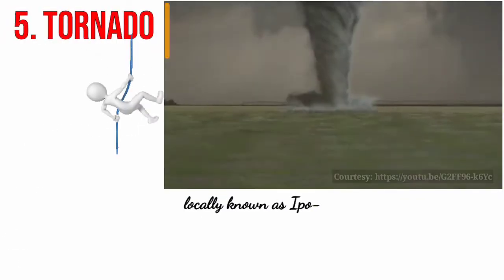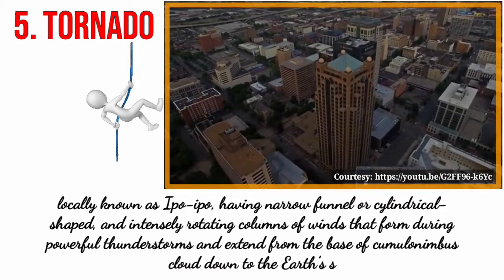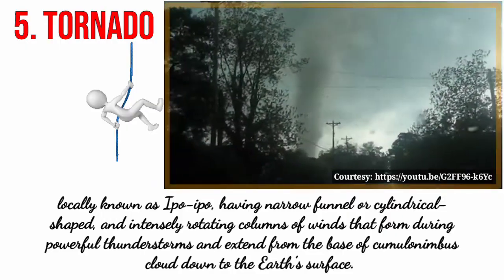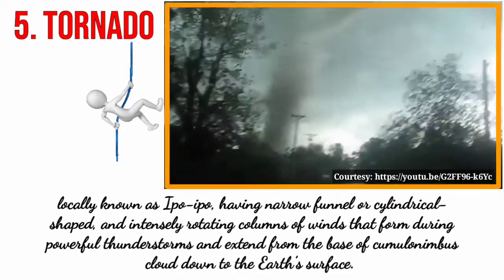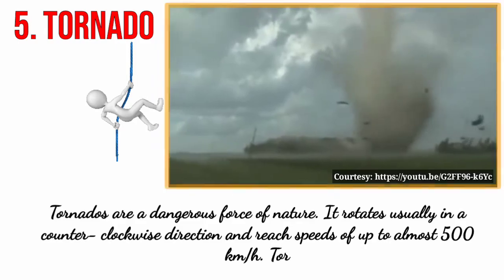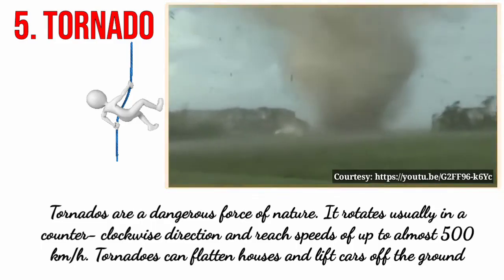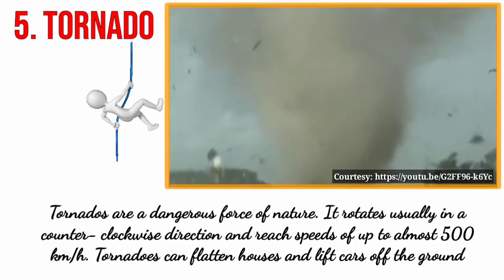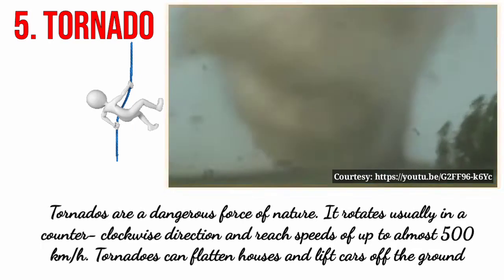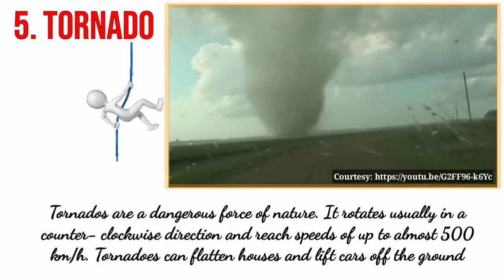Next we have the tornado, locally known as ipo-ipo, having a narrow funnel or cylindrical shape — an intensely rotating column of winds that forms during powerful thunderstorms and extends from the base of the cumulonimbus cloud down to the earth's surface. Tornadoes are a dangerous force of nature. They rotate usually in a counterclockwise direction and can reach speeds of up to almost 500 kilometers per hour, and can flatten houses and lift cars up off the ground.